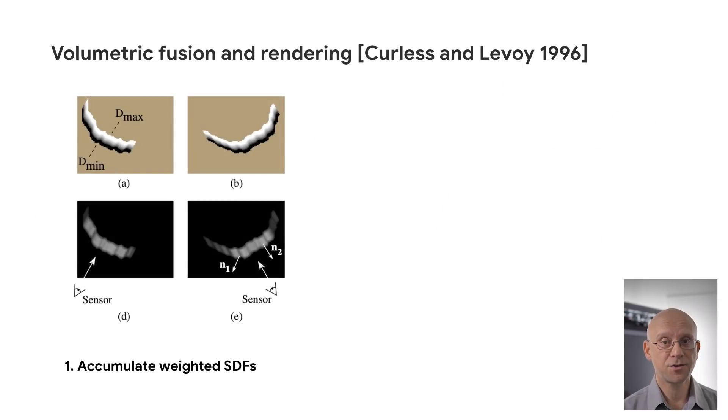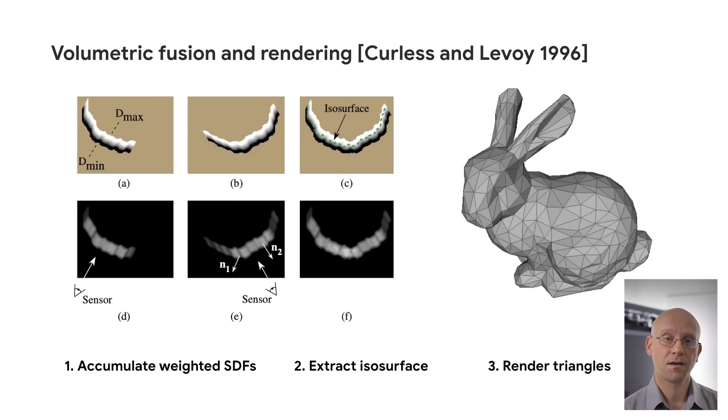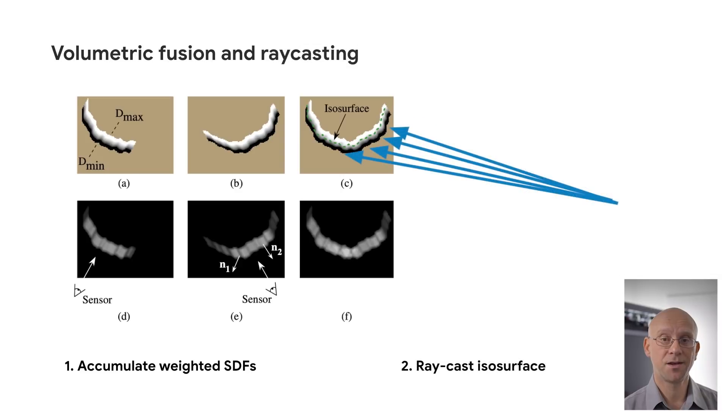A traditional volumetric fusion system would take these three depth images and fuse them in a voxel representation, extract the isosurface using marching cubes, and then render the triangles. We can improve this a little bit using modern GPU hardware by eliminating the surface extraction step and just raycasting the voxels directly. This eliminates the additional data structures and unpredictable memory usage of a triangle mesh.